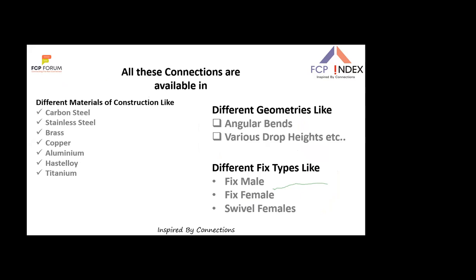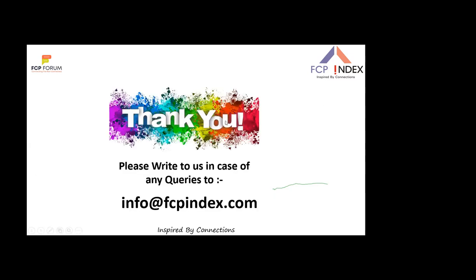All these connections are available in different materials of construction: carbon steel, stainless steel, brass, copper, aluminum, Hastelloy, titanium, and others. They also come in different geometries — angular bends, various drop heights — and different fixed types such as fixed male, fixed female, swivel female, and swivel male.